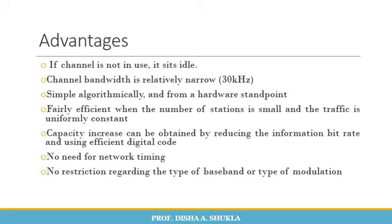Moving on to the advantages of FDMA: if a channel is not in use, it remains idle. The channel bandwidth is relatively narrow at only 30 kHz. The algorithms applied are simple from both a software and hardware perspective. It is fairly efficient when the number of stations is small and traffic is uniformly constant. Capacity can be increased by reducing the information bit rate and using efficient digital coding. There is no need for network timing and no restrictions on the type of baseband or modulation.